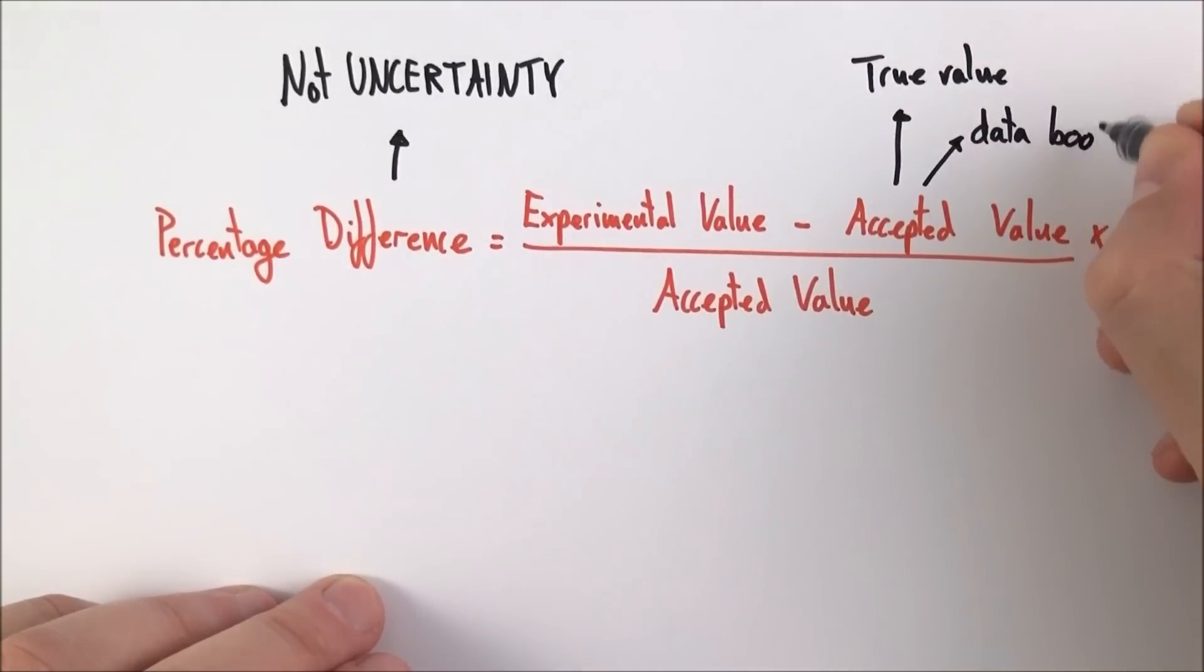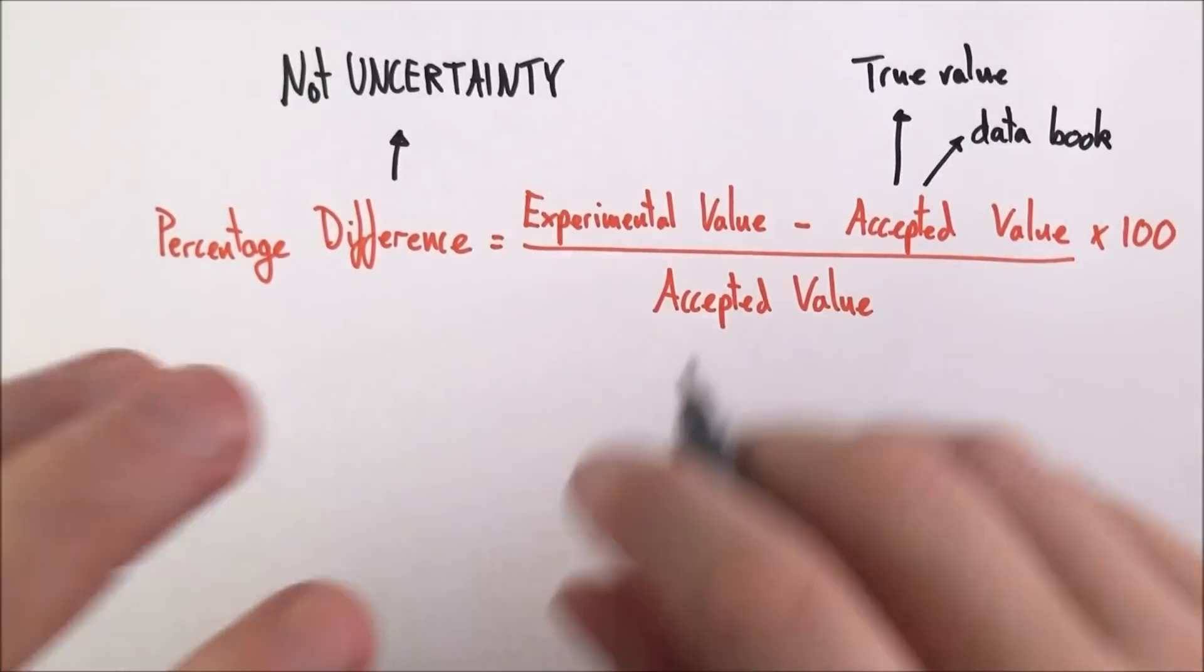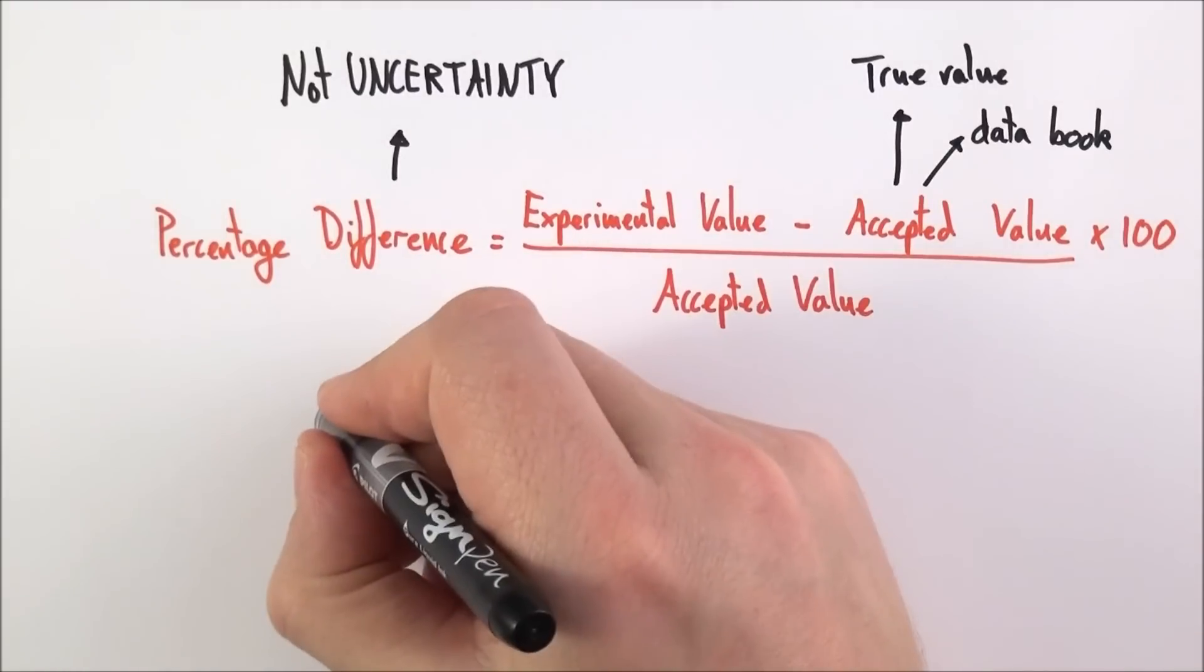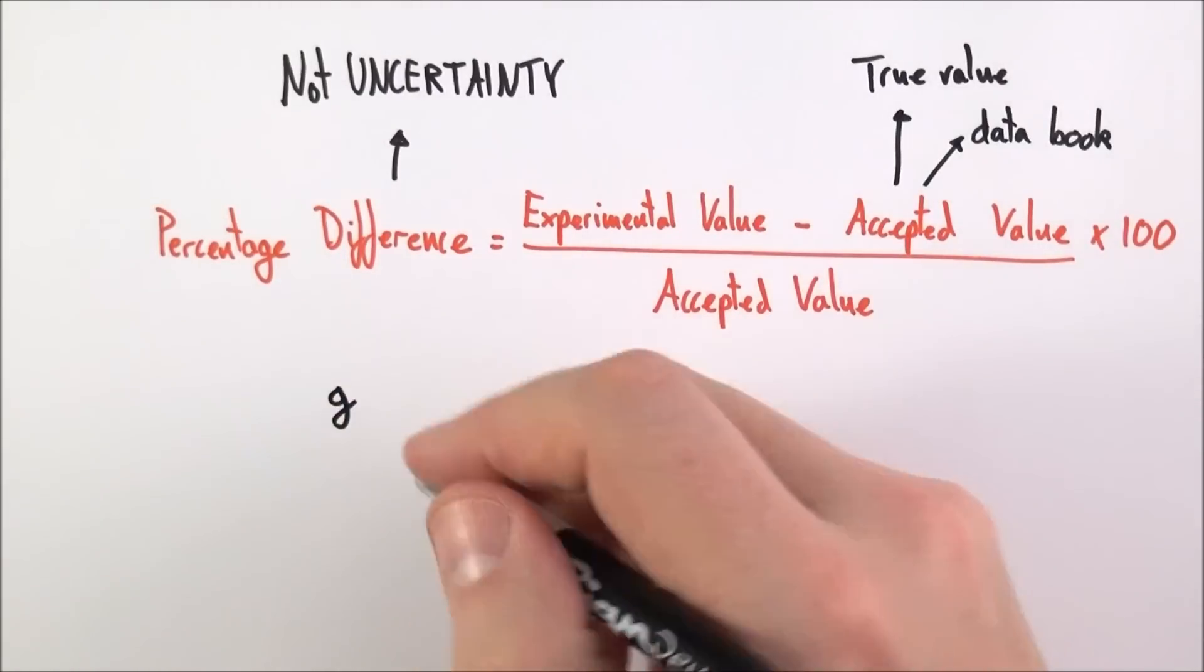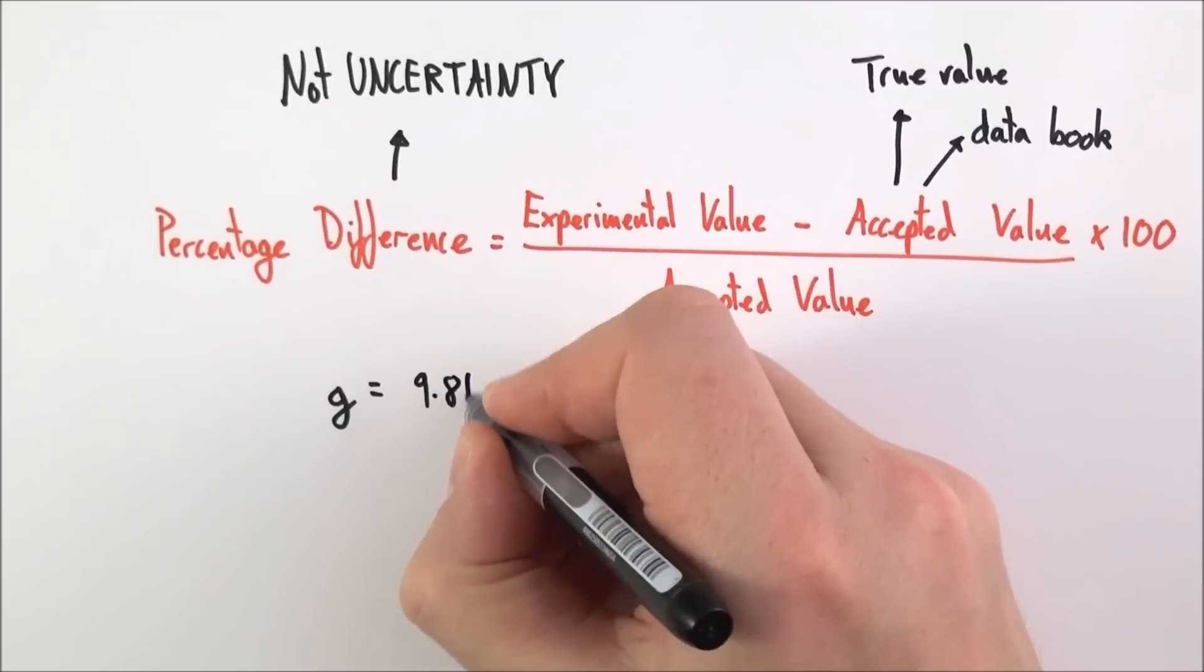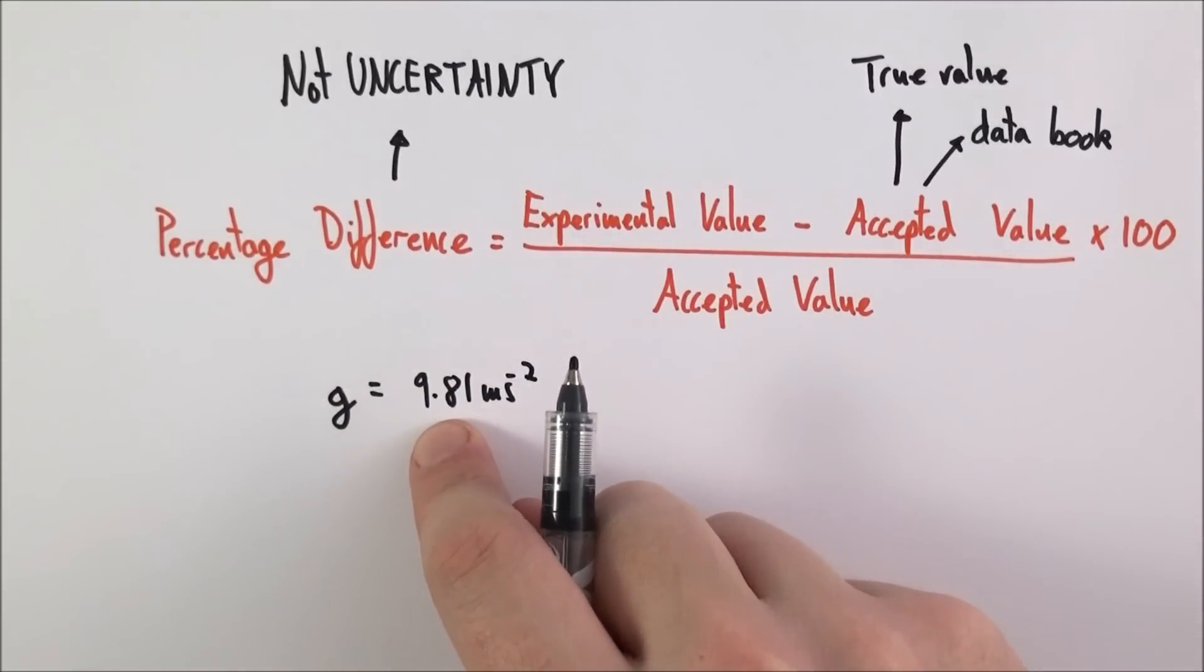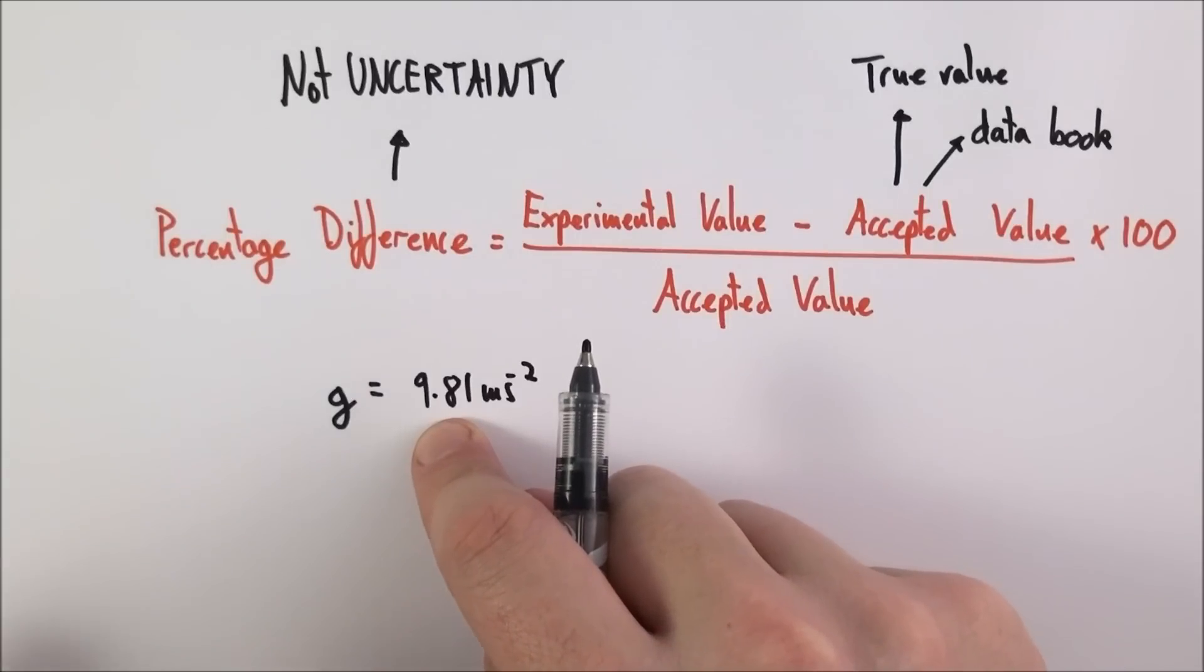An example of this might be perhaps you're measuring the acceleration due to gravity. We know from the data book that you have in your exams, the figure that you're using all the time, that the acceleration due to gravity g is equal to 9.81 meters per second squared. This is our accepted value for the gravitational field strength on the earth's surface.